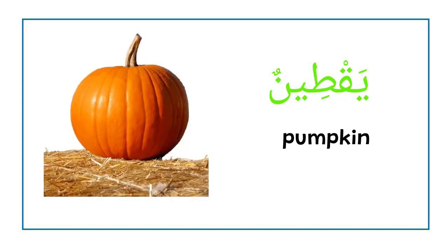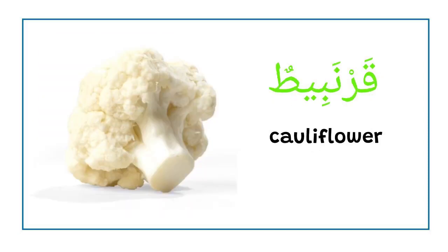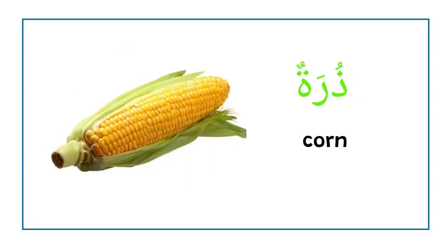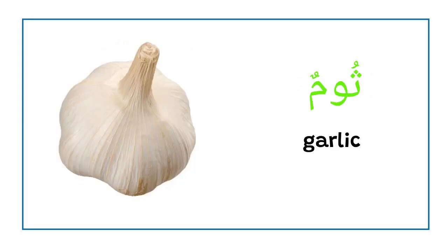Yaktin — pumpkin. Badanjain — eggplant. Kornabyet — cauliflower. Dhurah — corn. Basalah — onion. Thum — garlic.